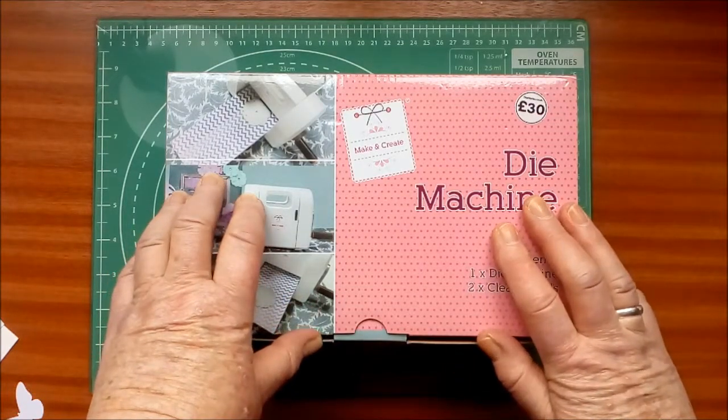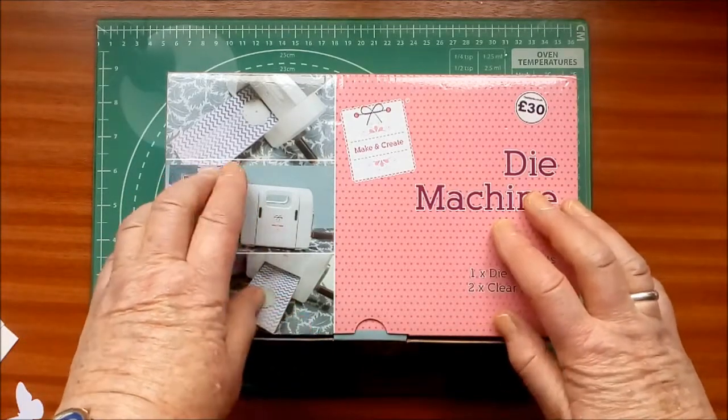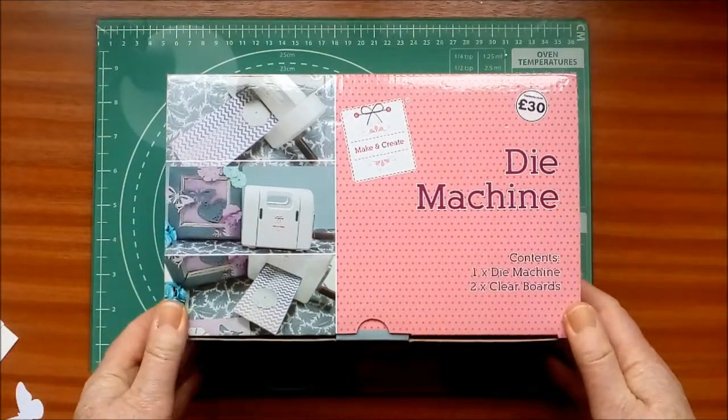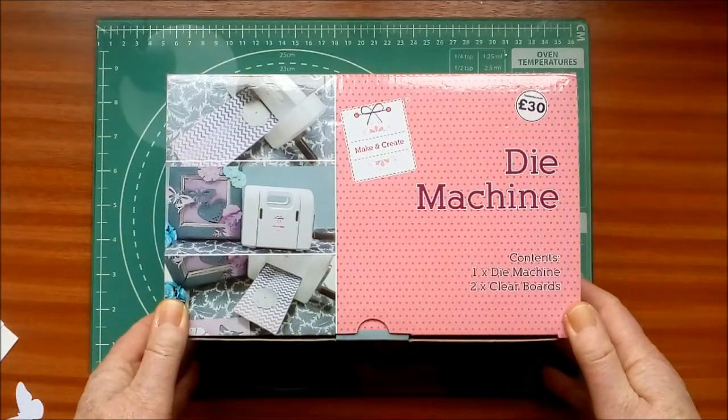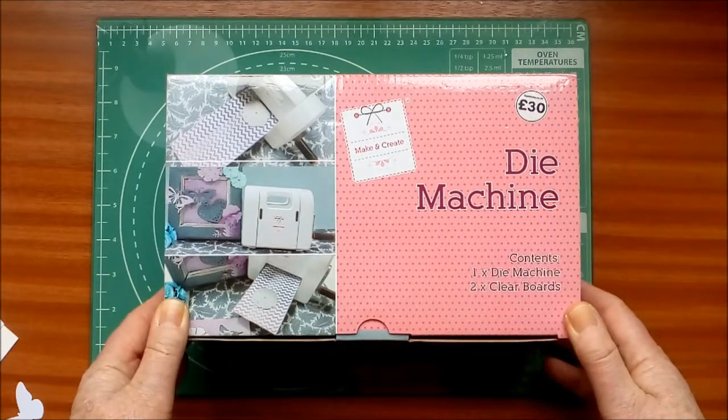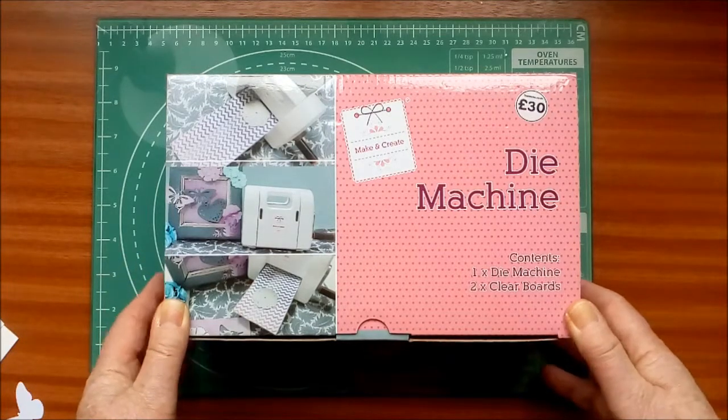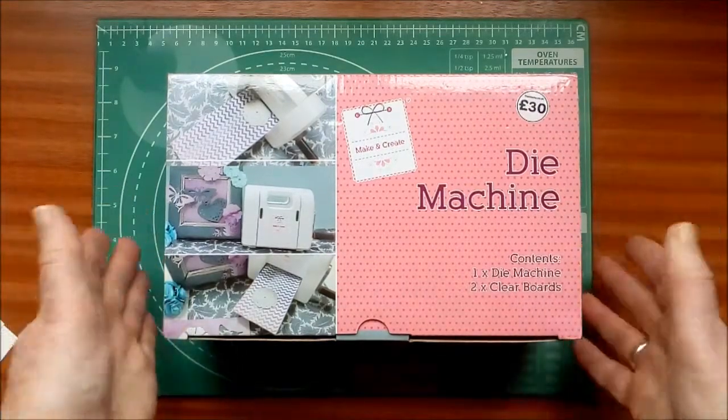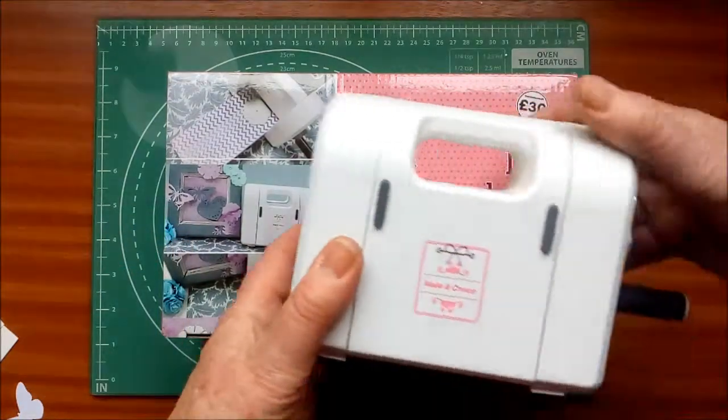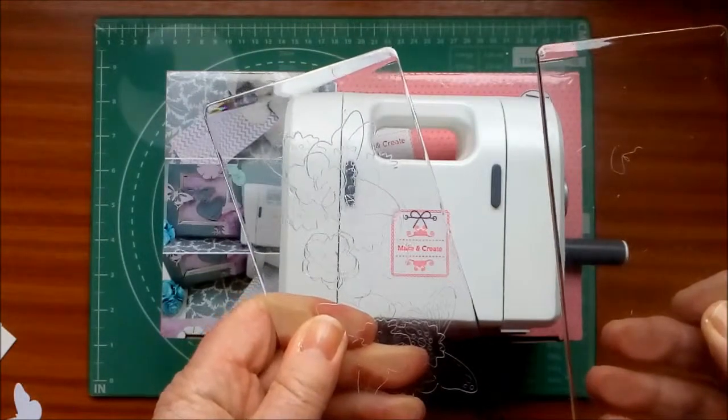Today we're looking at two new machines, or relatively new ones, a small one and a large one. Starting with the small one, this was from the Works. There's a price of £30 on it, I actually paid 20. If you keep your eye open and are a member of the Works Rewards Club, there are some good offers on. What do you get? You get the machine and you get two cutting plates, and that's it.